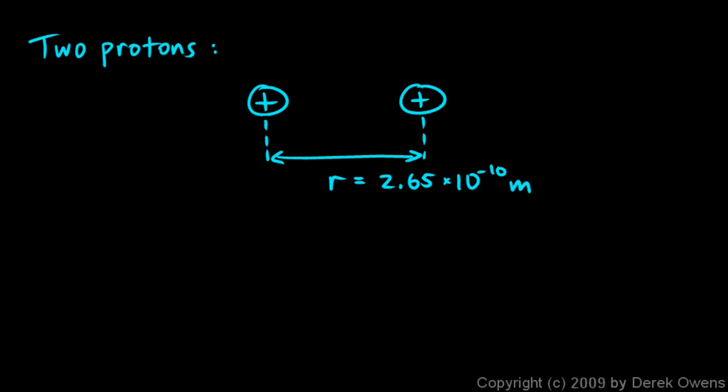Okay, let's work an example problem. Here we're given two protons, and we're told they're this far apart, 2.65 times 10 to the negative 10th meters. And we're told to find the electrostatic force between them. Well, we're just going to use this equation. K, q1, q2 over r squared.